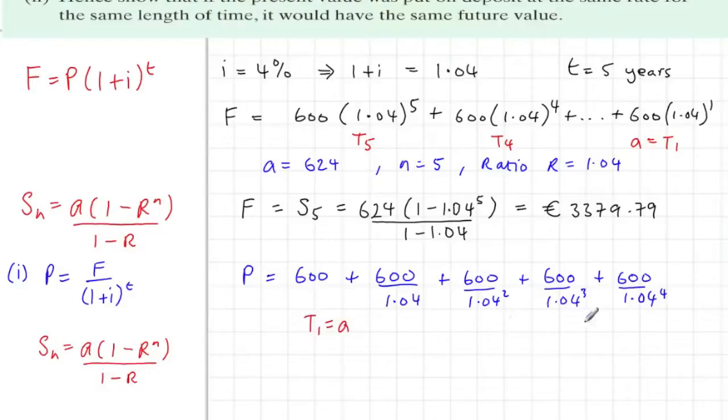Term 1 is 600, so a = 600, and we have term 2, term 3, term 4, term 5, etc. So writing down the letters that go into the formula, a = 600 and there are 5 terms so n = 5, and the common ratio, be careful of it, is 1 over 1.04.